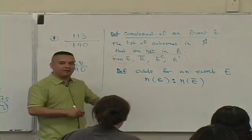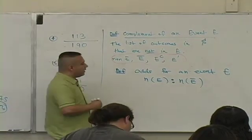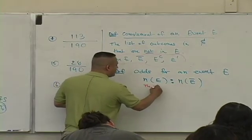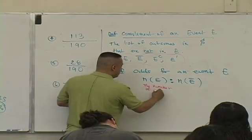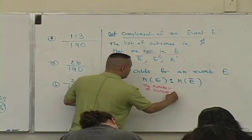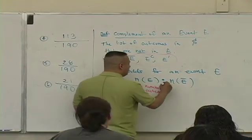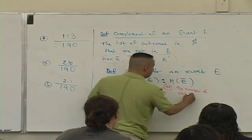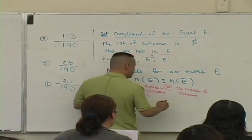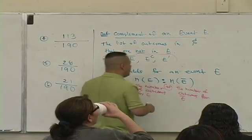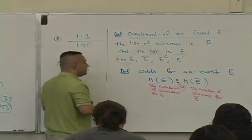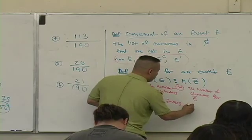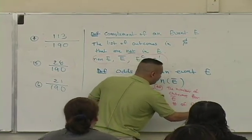Now, what this means to you, aside from the technical definition, when you read it, it's the number of outcomes for E to, this is semicolon, to the number of outcomes for the complement. And in a gambling sense, it's the number of successes to the number of failures.